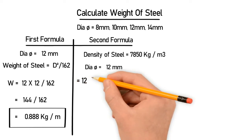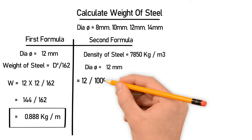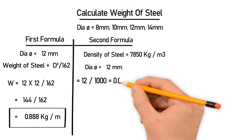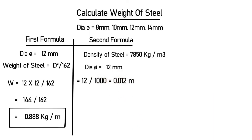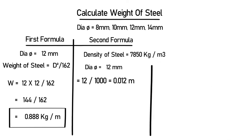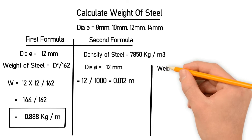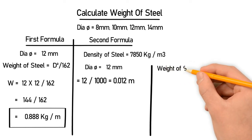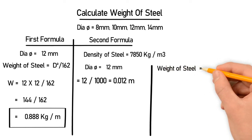This will be 12 divided by 1000, which gives you 0.0012 meter. So this diameter is now in meters and we can use it in the main formula. The second formula to calculate weight of steel is weight equals area multiplied by density.